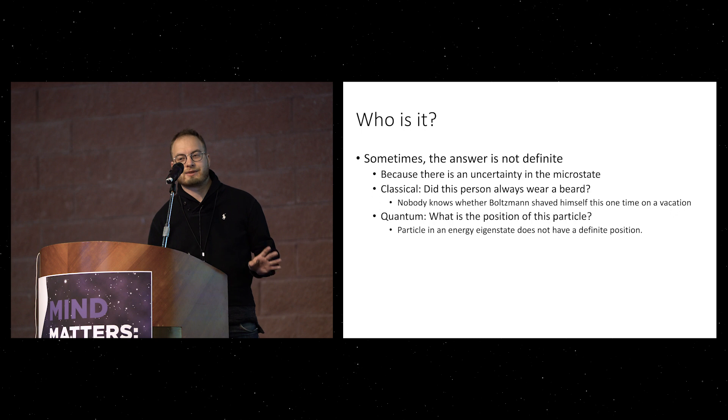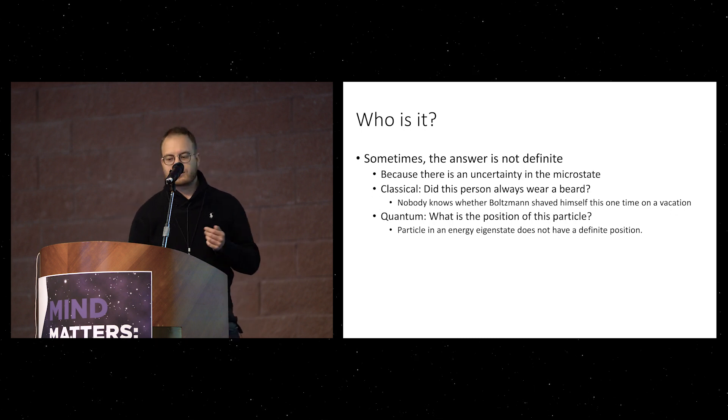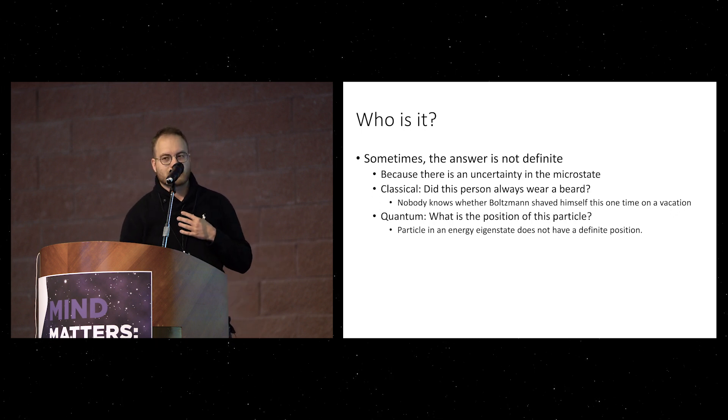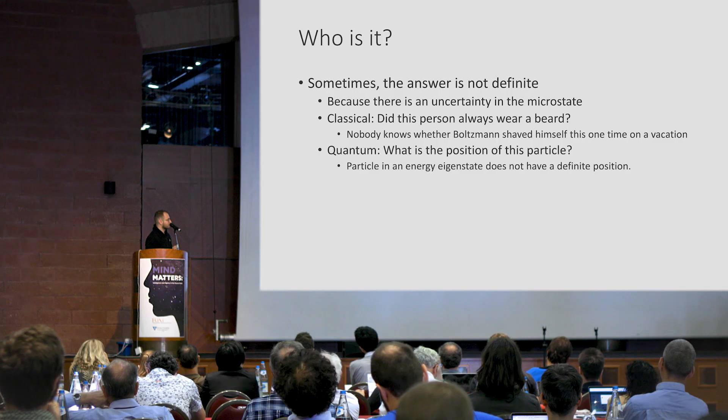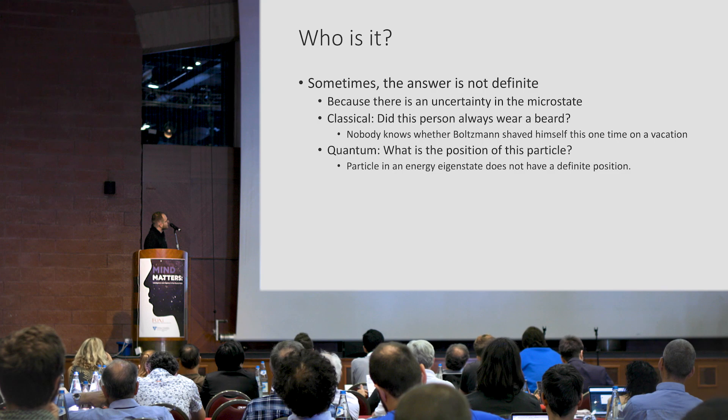So sometimes the answer is not definite, because there can be uncertainty in microstate. There are two types. One is classical, and the other one is quantum. Classical is something that the answer is out there, but nobody knows it, or maybe at least I don't. But there's just a classical uncertainty. Then there is a quantum uncertainty, which has something to do with the fact that not every question can be answered with certainty.